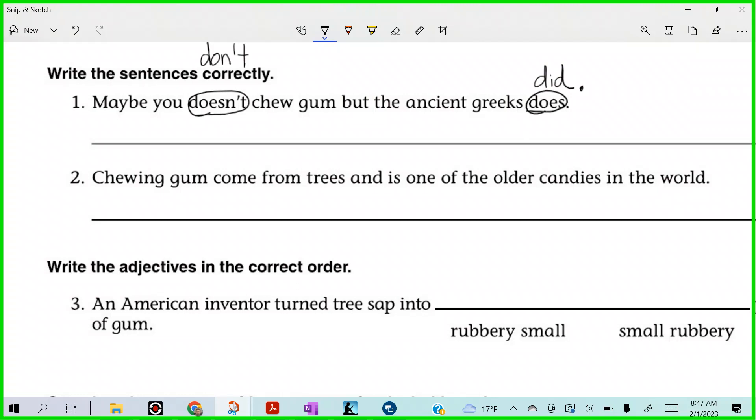There's still mistakes on here, Leo. What do you think? But we have to have a comma before the conjunction, right? Yes. Vinny, what's up? We have to capitalize ancient and Greeks. Greeks. Right? So, maybe you don't chew gum, but the ancient Greeks did. Period.